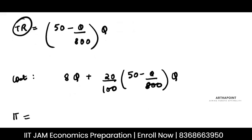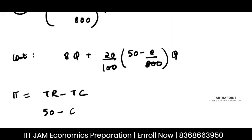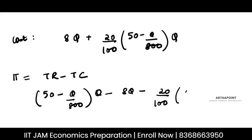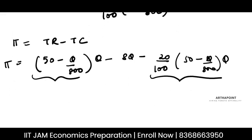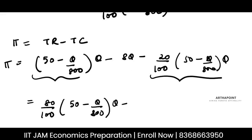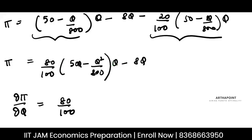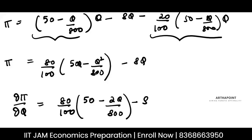So what is the profit? It is TR minus TC: (50 − Q/800) × Q − 8Q − (20/100)(50 − Q/800) × Q. This simplifies to (80/100)(50 − Q/800) × Q, which is the profit to maximize. Opening the bracket: profit = 80/100 × (50Q − Q²/800). Differentiating: dπ/dQ = 50 − 2Q/800 minus 8 = 0.